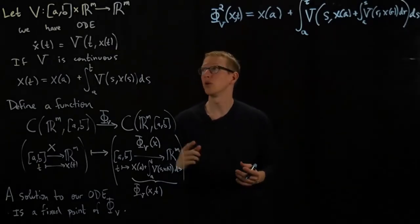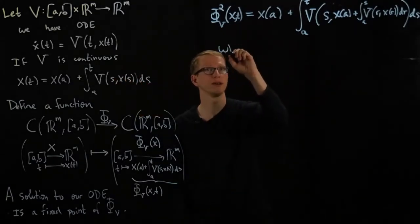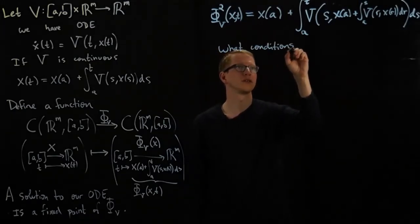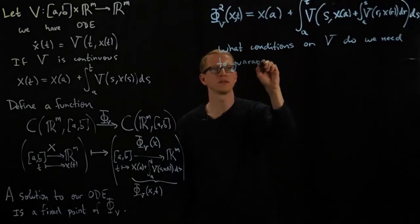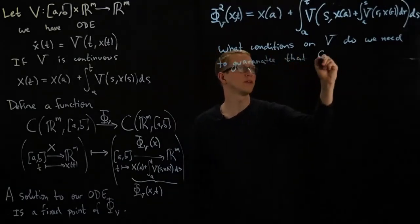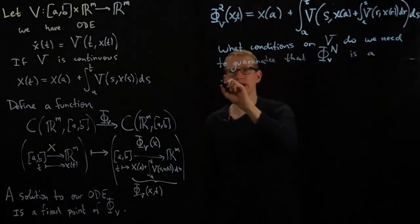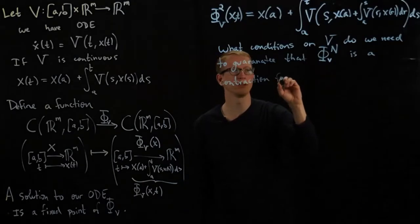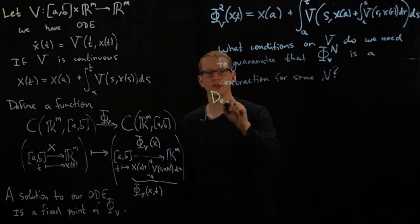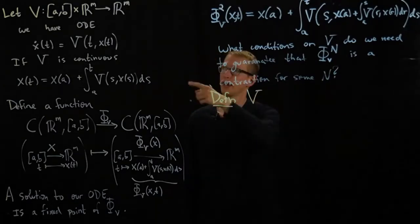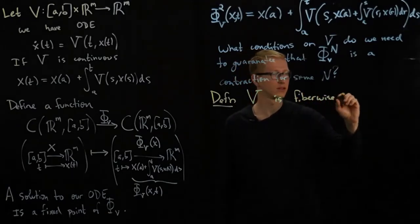But we should ask ourselves what conditions on V do we need to guarantee that this is eventually a contraction? So let me write that out: what conditions on V do we need to guarantee that φ_V raised to some power is a contraction for some n? And it turns out we know an answer to this, and it motivates the following definition.